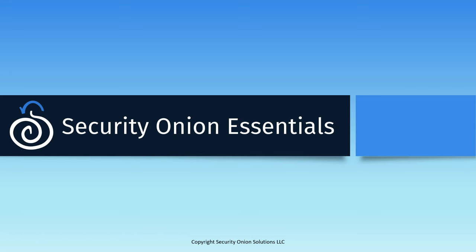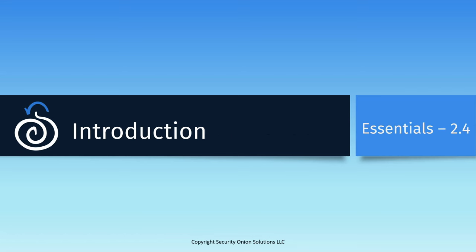In this introductory video, we're going to start with an overview of the course, including the different topics we'll be covering and the names of the corresponding videos. Then we'll move on to an explanation of the different tools and components that make up the Security Onion platform, how they work together, and different models for deploying Security Onion. Finally, we'll talk about some resources you can access if you have questions or trouble along the way.